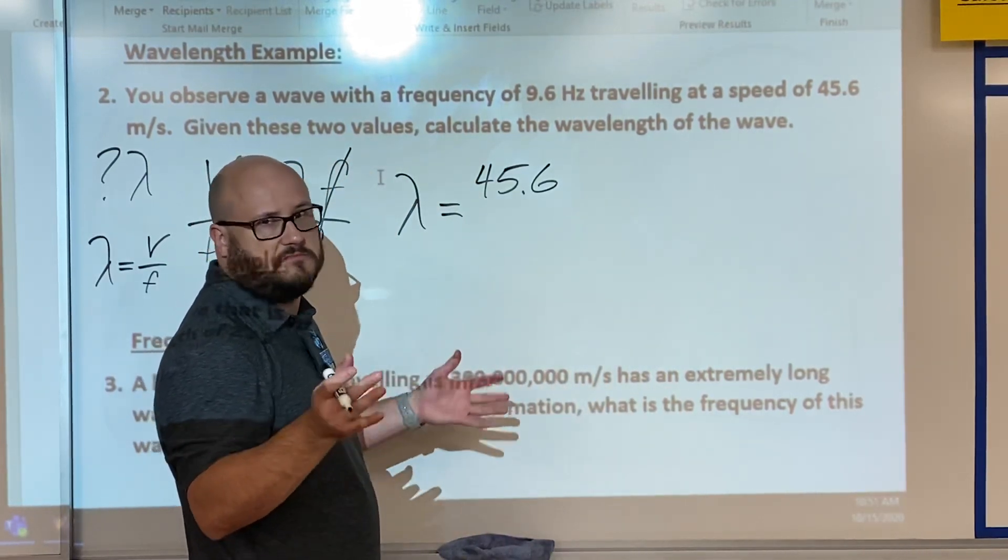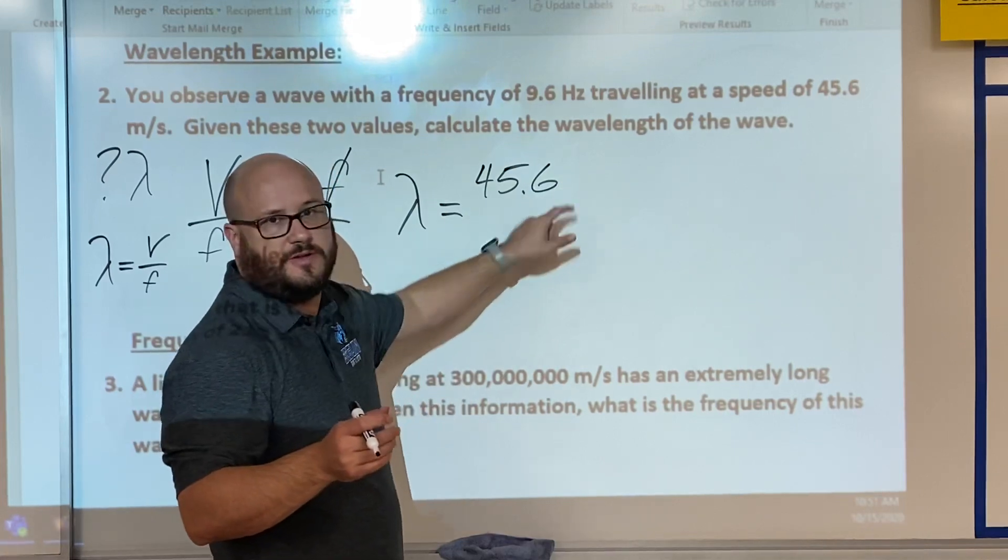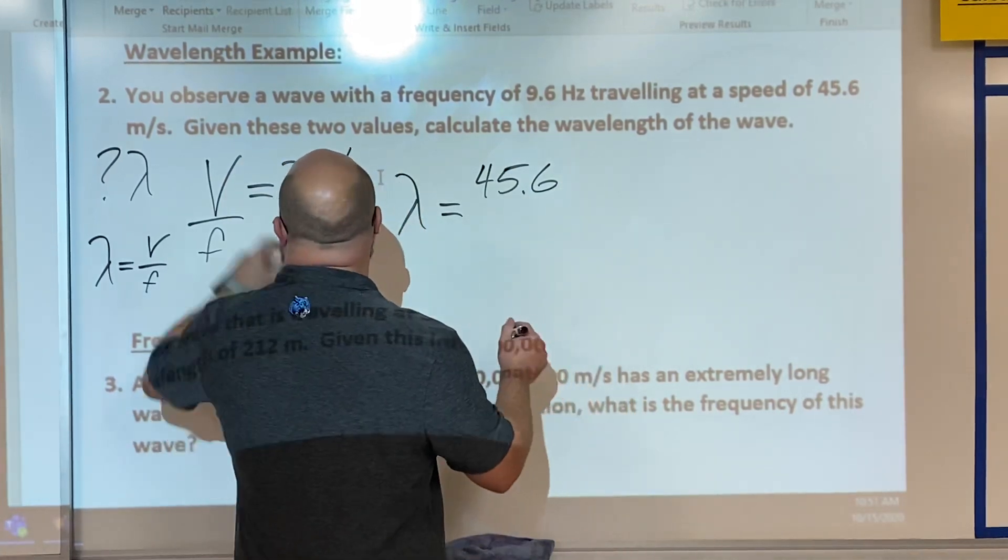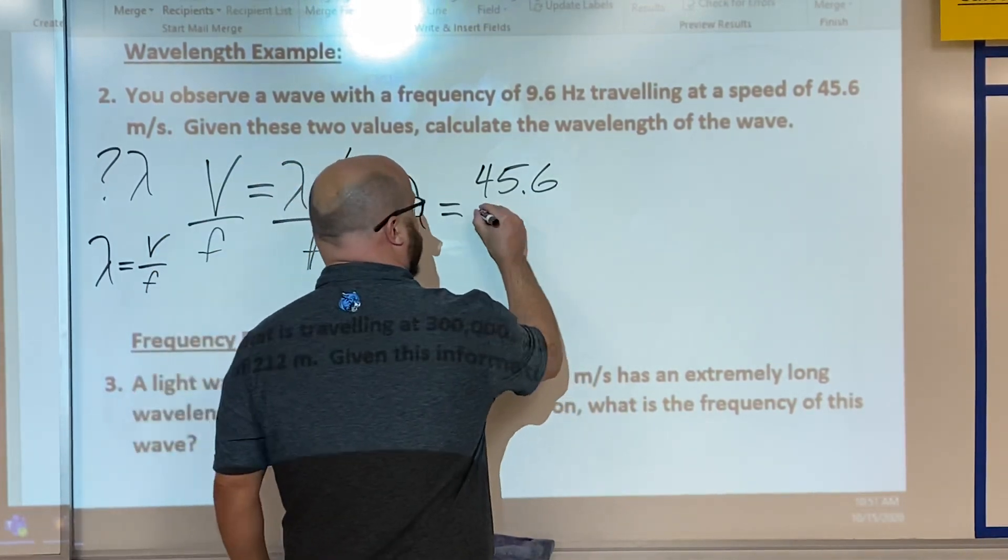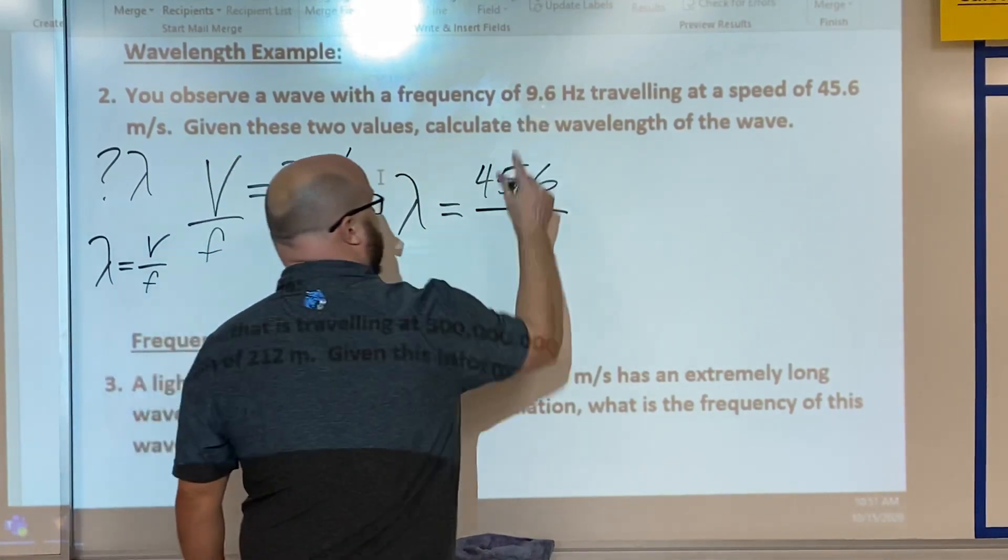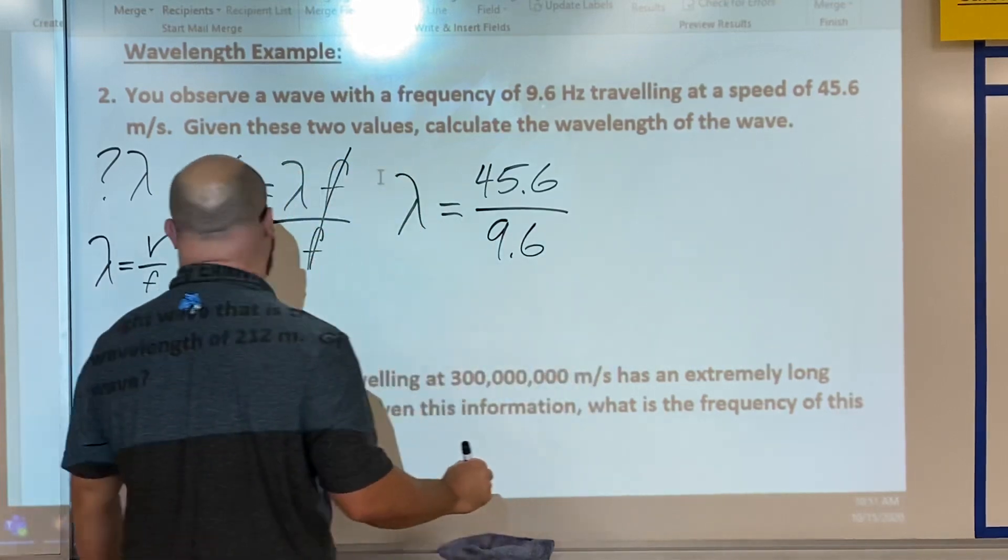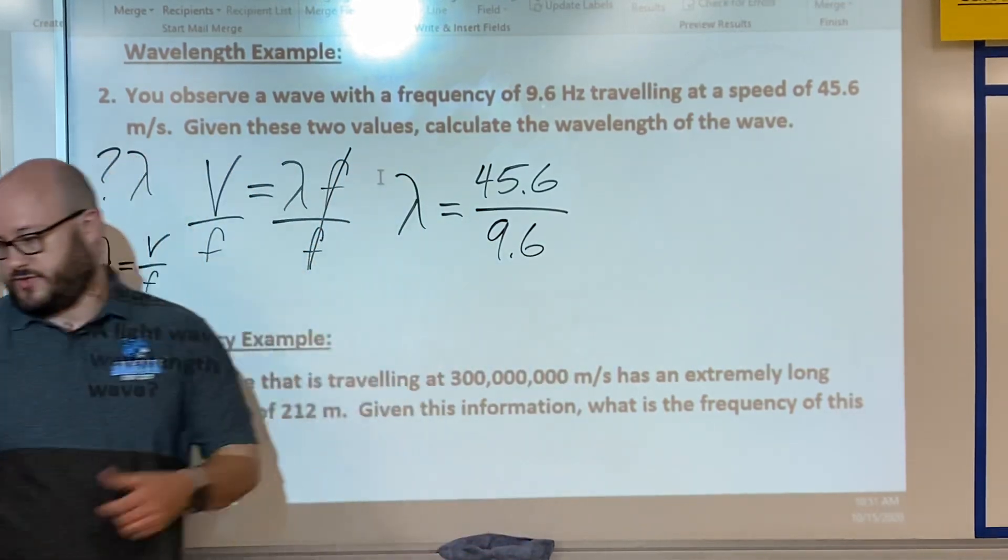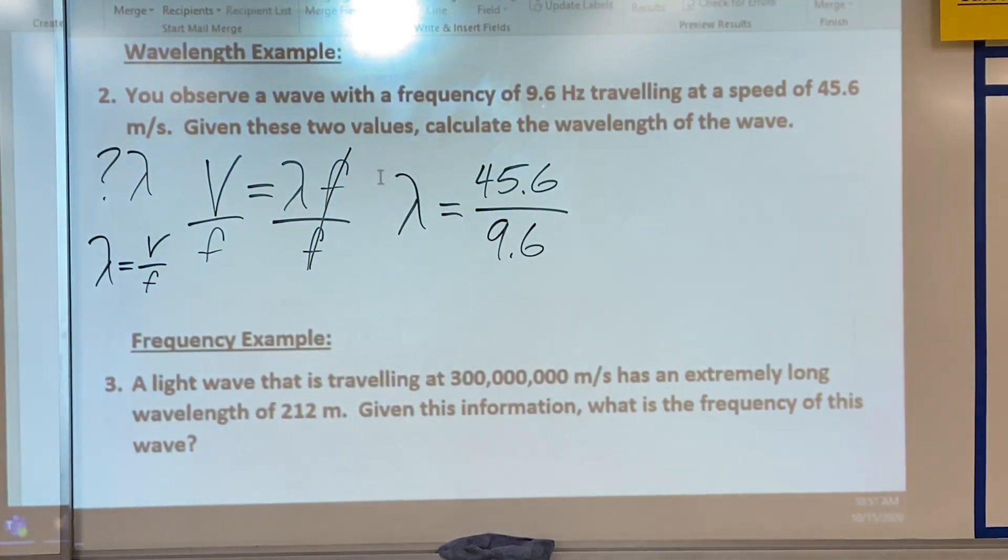45.6 meters per second divided by frequency of 9.6. Now pull out the trusty calculator again. 45.6 divided by 9.6 gives us 4.75.